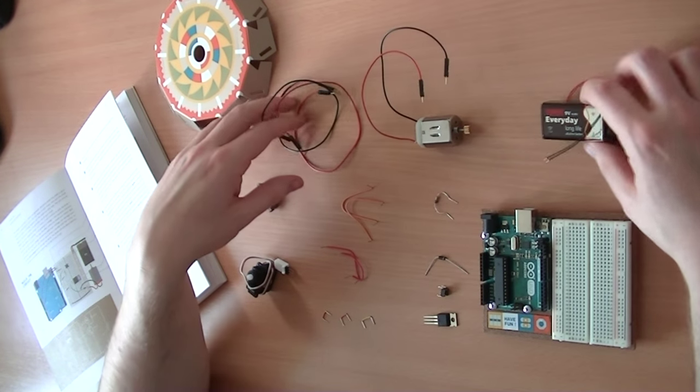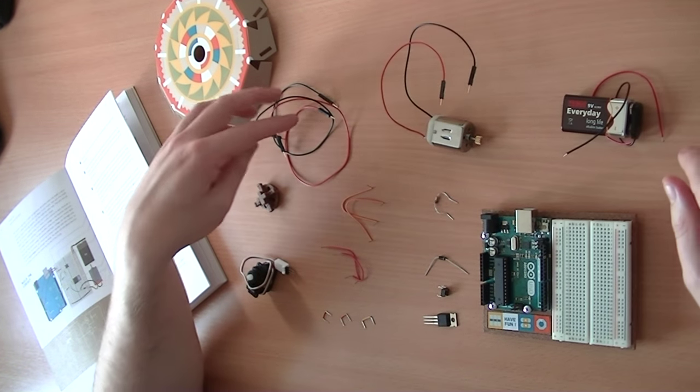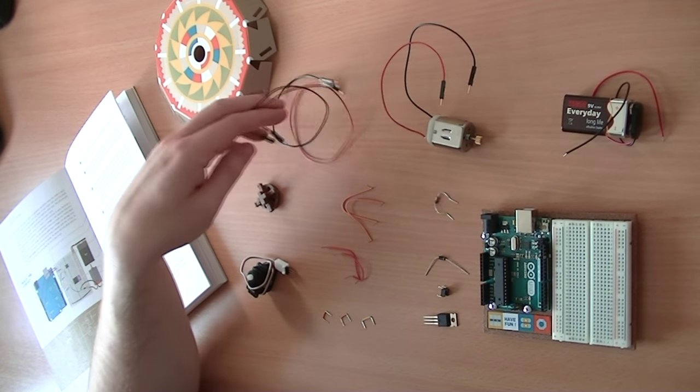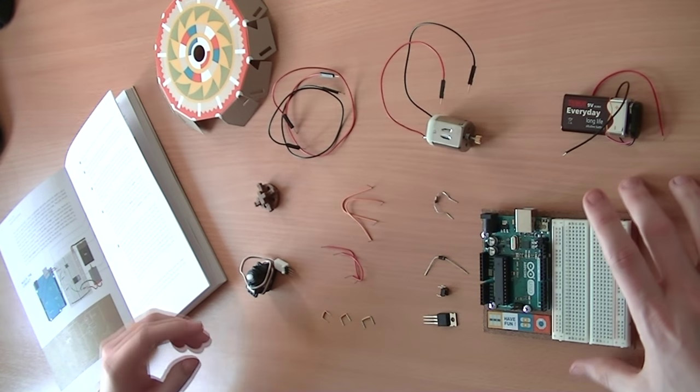We're actually going to be using two different sets of power for this. The 9V battery is going to charge a motor and then the standard 5V connecting to the circuit is going to be powering the rest of the circuit itself.